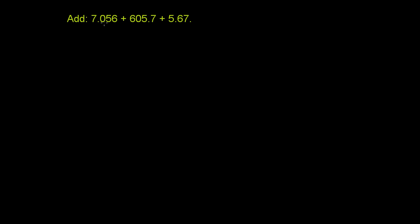We need to add 7.056 to 605.7 to 5.67. Now when you're adding any number, you always want to make sure you line up numbers in the same place. And especially when you're dealing with decimals, the easiest way to do that is to just line up the decimals.